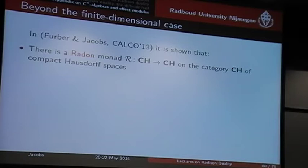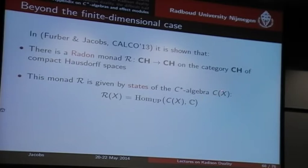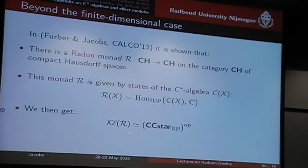As I mentioned yesterday already, with Robert, we tried to generalize this. We find the Radon monad on the category of compact Hausdorff spaces. Radon of X is the unital positive maps on C(X), which again is compact Hausdorff, so it gives you an endofunctor. And then you can prove that the Kleisli category is described in this way.